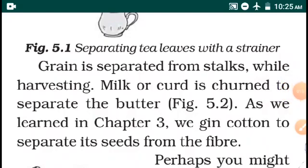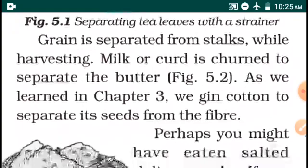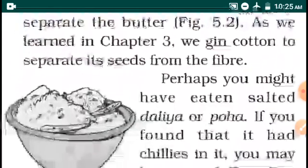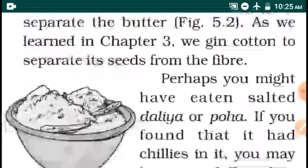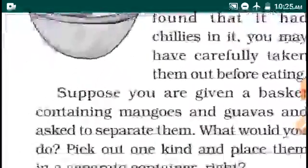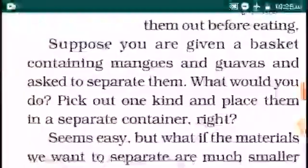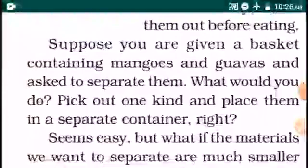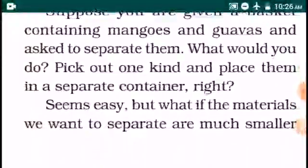Grains are separated from the stalk while harvesting by threshing. Milk is churned to separate the butter. Perhaps you might have eaten salted dahlia. By using hand-picking — suppose you are given a basket containing mangoes and guavas and asked to separate them — you would use the hand-picking method to separate them.